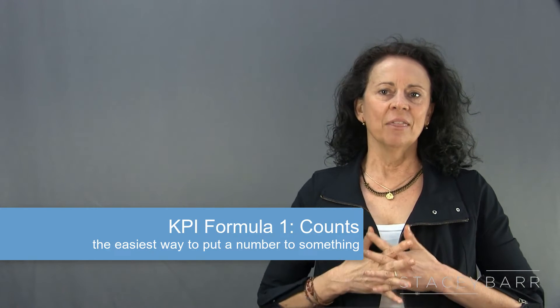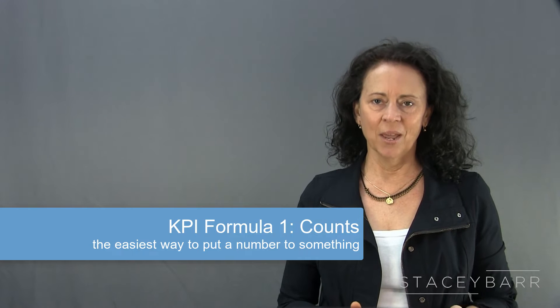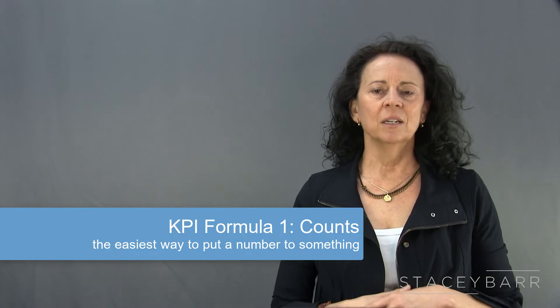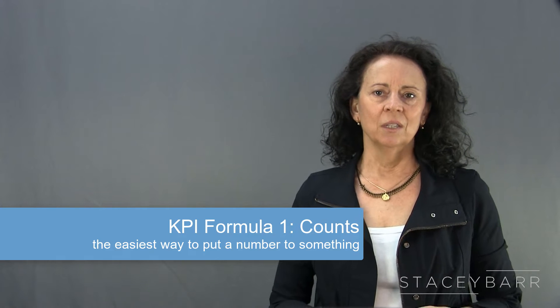Basic KPI formula number one is the count. Counting is by far the easiest way to put a quantity to something you're observing. For example: the number of customers who are satisfied, the number of workplace accidents, the number of sales, or the number of processes that are automated. Counts work very well when the scope or population within which you are observing a performance result stays pretty much the same size over time. But when your population changes over time, counts are misleading — an increase in the count might simply be because the population size is increasing and not because performance is changing. In cases like that, a percentage will tell you with more accuracy the degree to which your performance result is happening.